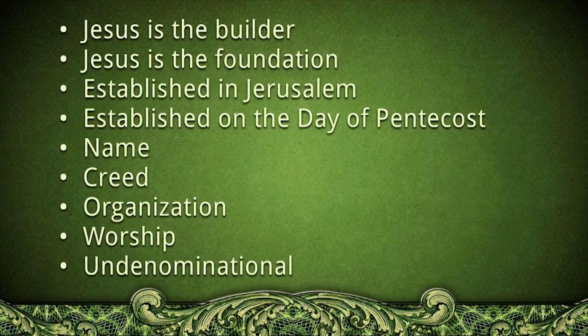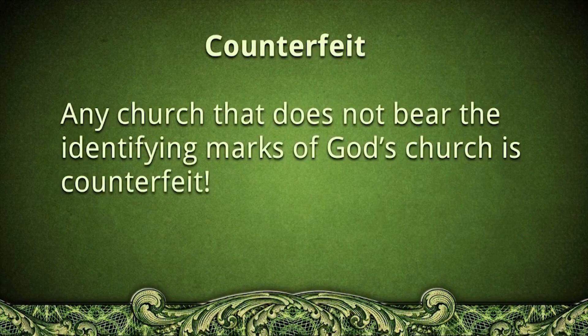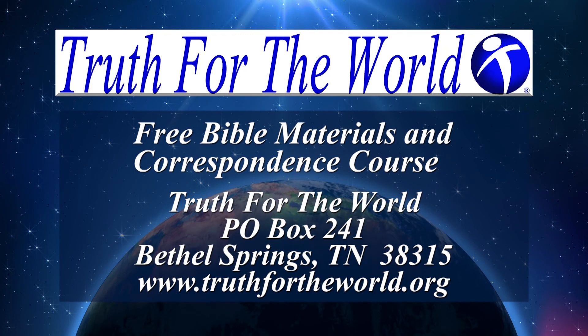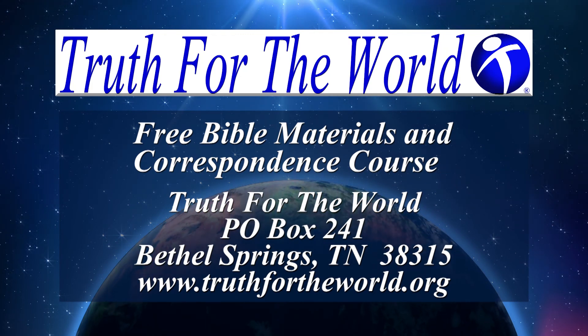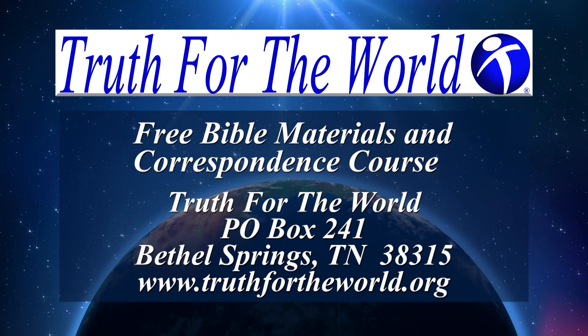The different identifying marks of God's church we've seen are: Jesus is the builder and the foundation; the church started in Jerusalem on the day of Pentecost; it uses a name that shows ownership by God; it follows the Bible as its creed; it follows scriptural organization and worship; and it is undenominational. Any church that does not bear these marks is counterfeit. If you would like a free Bible correspondence course, write us at Truth for the World or visit us online at truthfortheworld.org.